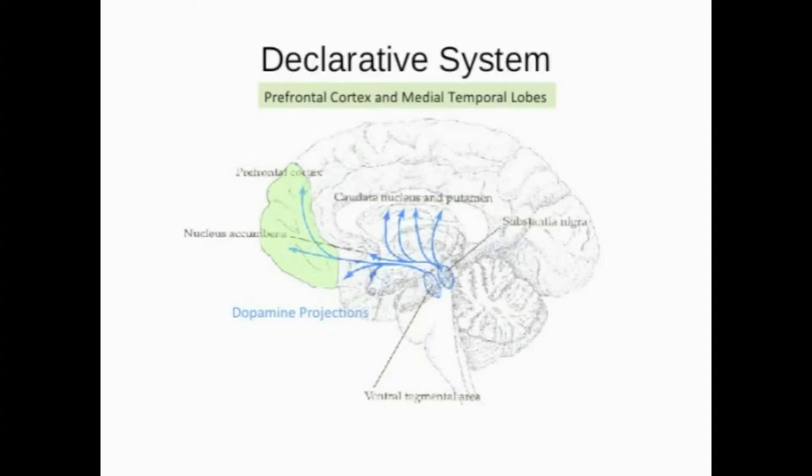First, it's important to know which learning and memory system is mediating the behavior of interest. We now know that humans have a wide variety of different learning and memory systems that for the most part are functionally and anatomically distinct. The most important of these include declarative memory systems, which mediate all of our conscious memories and almost all the learning that occurs when you listen to a lecture or read a book. Declarative memory systems depend heavily on prefrontal cortex and medial temporal lobe structures including the hippocampus.